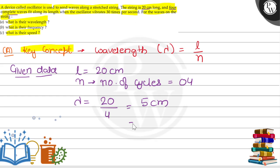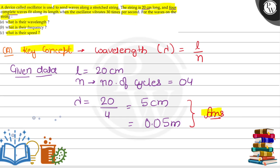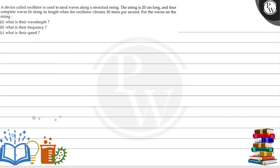You can write this as 5 centimeters, or you can also convert it to meters: that is 0.05 meters. So that is the answer to the first part. Now let's talk about the second section — we have been asked to find the frequency.